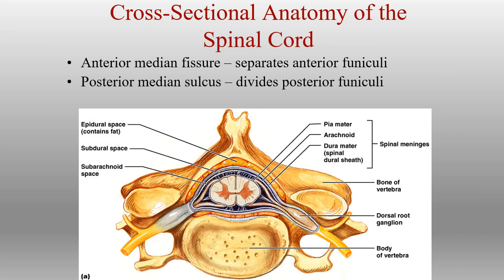The spinal cord has two deep grooves: the posterior median sulcus and the anterior median fissure. Just like the brain, the sulcus is shallower and a little less wide than the anterior median fissure. The pia mater goes down deep into the fissure and sulcus as well. We can also see the denticulate ligaments coming off of the cord, extending from the pia mater and helping to anchor the cord on the sides. Next up, we'll talk about the brain and spinal cord more specifically.